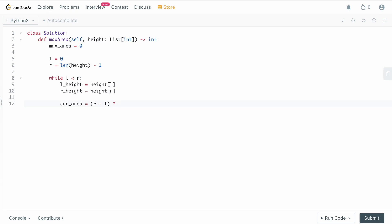So we have to use the smaller height. So we're going to say the minimum of left_height and right_height. Okay, cool.